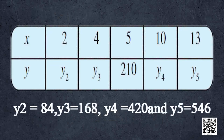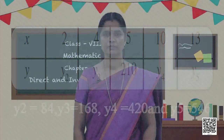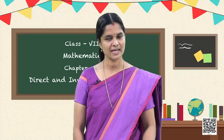So in this way, we can calculate y2, y3, y4 and y5, which correspond to the cost of cloth measured at 2 meters, 4 meters, 10 meters, and 13 meters respectively. I hope you understood the calculations, and in the same way you can find answers for the questions posed in the beginning of the chapter.